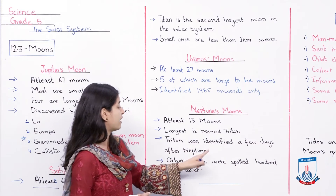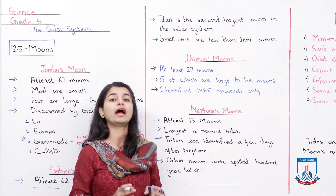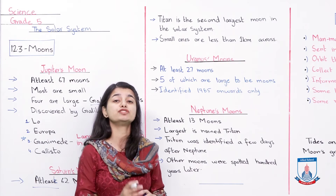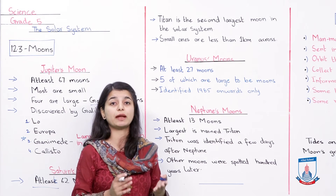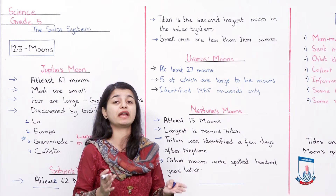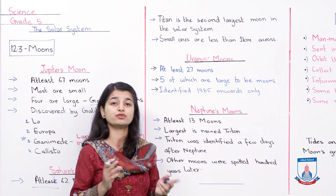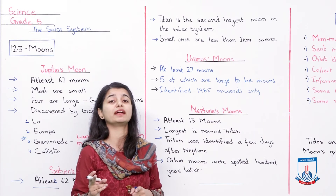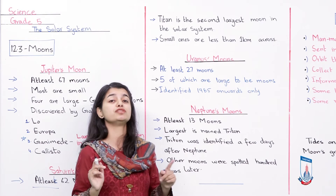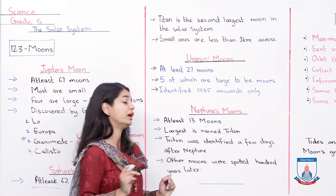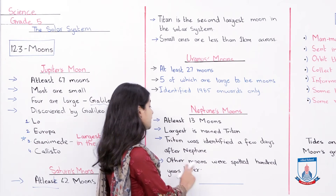Triton was identified a few days after Neptune. Neptune ko identify karne ke kuchhi din baad unko Triton bhi mil gaya tha, aur uski wahi reason thi ki Neptune itself was very big. Lekin Triton jo tha, woh bhi kaafi bada tha. So unhone identify kar liya ki achha Triton hai and that is going around Neptune, so that is also a moon. Other moons were spotted 100 years later.